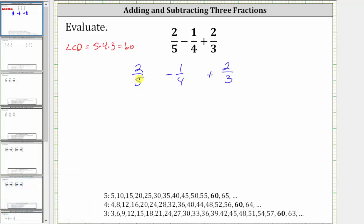Since five times 12 is equal to 60, we multiply the numerator and denominator of 2 fifths by 12.